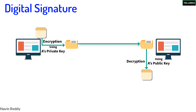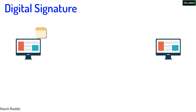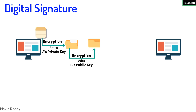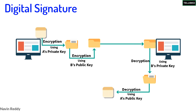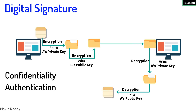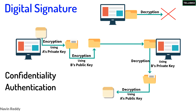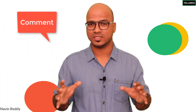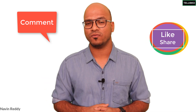What we normally do is: from A's side, before sending the message, A first encrypts the message using A's private key, and then the same packet is again encrypted with B's public key — so we have double encryption. When B receives that packet, it first decrypts with B's private key, and then again decrypts using A's public key. Now we have achieved two things: confidentiality and authentication. Even if there is a node C in between, C cannot decrypt the message because it is encrypted with B's public key. That's how we achieve a digital signature. I hope you enjoyed this video — let me know in the comment section and do subscribe. Bye bye.